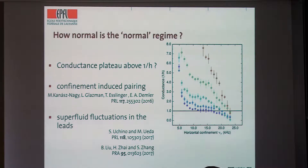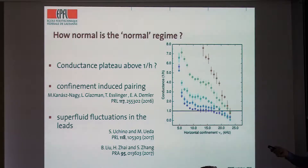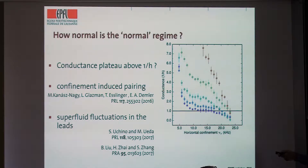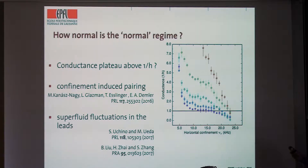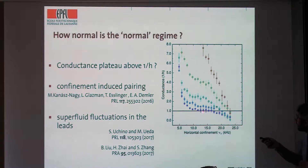Regarding whether we're in the linear response regime: yes, that is something we checked. In the superfluid regime the response is nonlinear — that's the IV curve I showed. In the normal regime, as far as we can see with our large error bars, transport takes place in the linear response regime. The way this works technically: we prepare a large bias (typically 20% of the Fermi energy) and let it relax as a function of time, taking the derivative to get IV curves. If we try to fit with exponentials (expected for linear response), we start to see strong deviations only in the superfluid region.